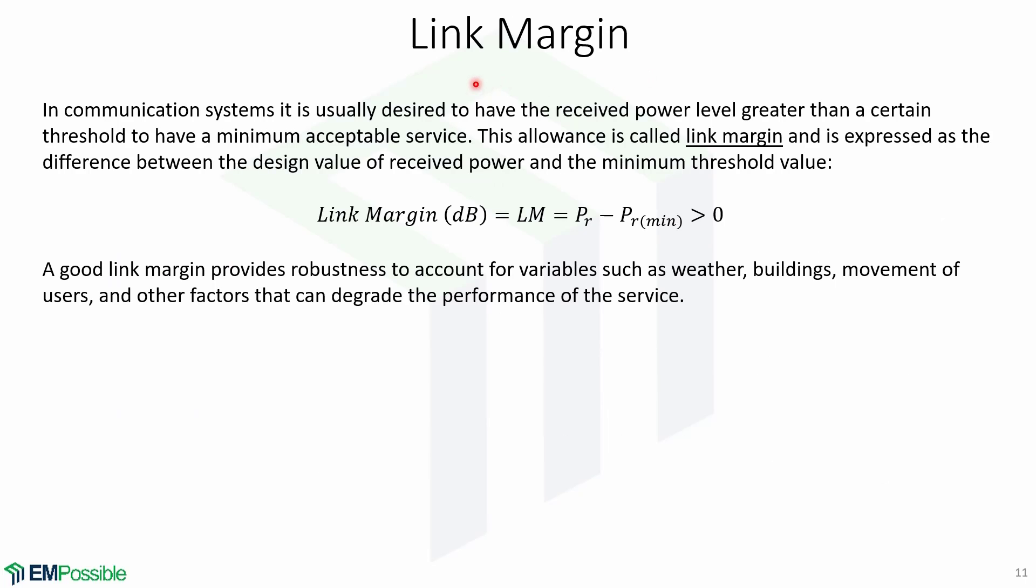Now let's talk about link margin. In communication systems, it is usually desired to have the received power level greater than a certain threshold to have a minimum acceptable service. This allowance is called link margin, and is expressed as the difference between the design value of the received power and the minimum threshold value, given in decibels by LM equals PR minus the minimum PR. It has to be greater than zero.